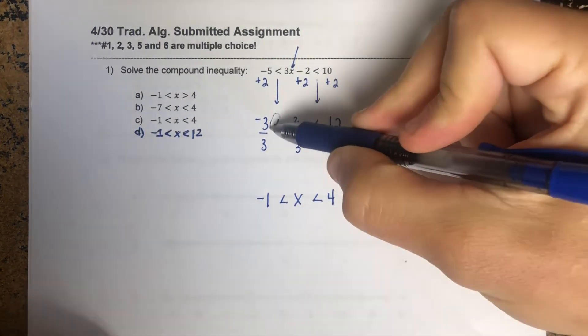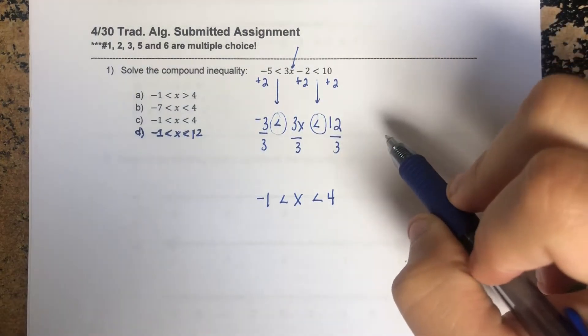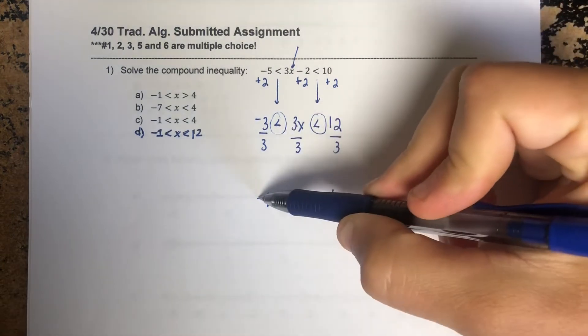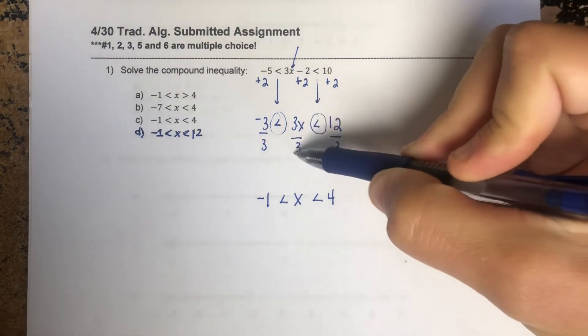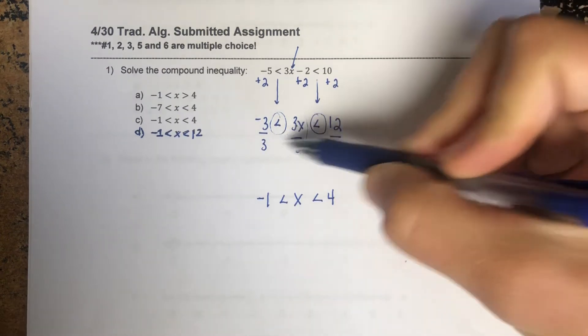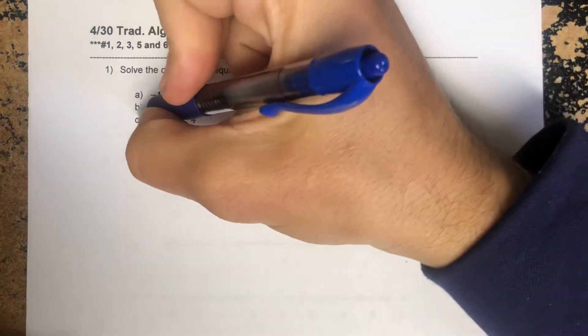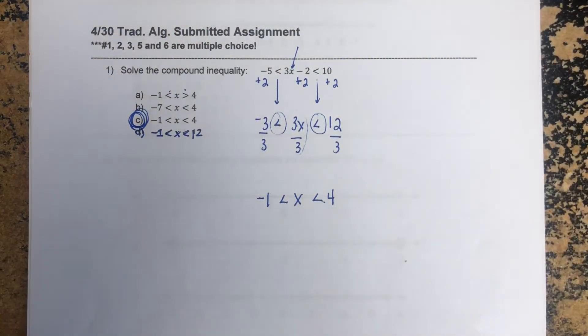Remember, the only reason these signs would change or flip direction is if you divide by negative. We did not. Just because this number is negative, it doesn't mean that sign flips. It's all about what you do. We divided by positive 3, nothing changes. This seems to match up with the letter C. Don't get tricked, it's not A. That's a weird inequality sign. Okay, it's letter C.